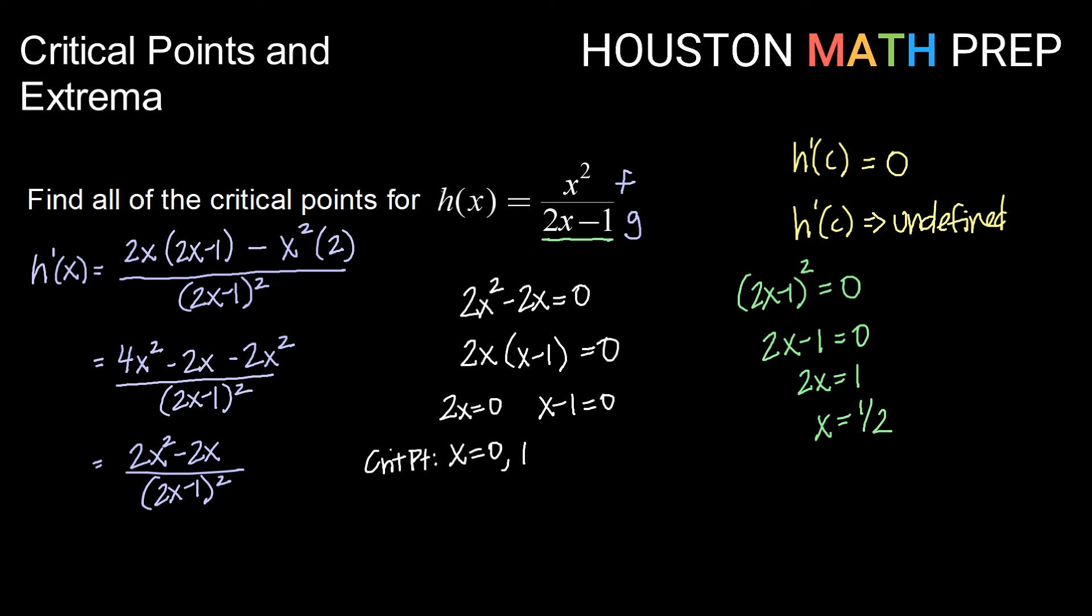Because x equals 1 half not only makes the denominator of the first derivative 0, but it also makes the denominator of our original function 0. So for that reason,